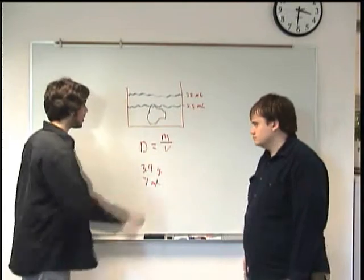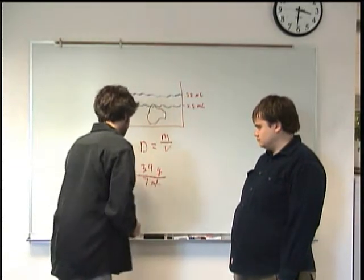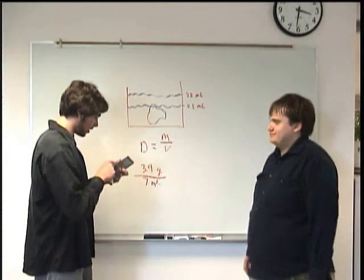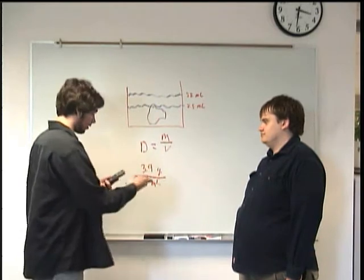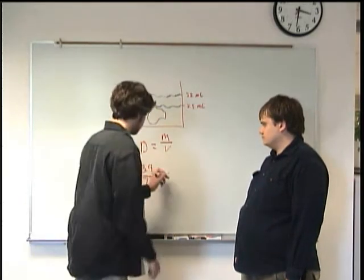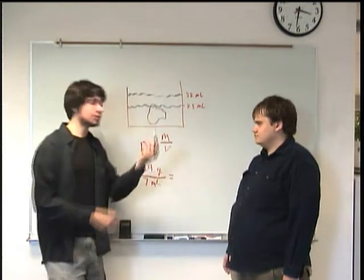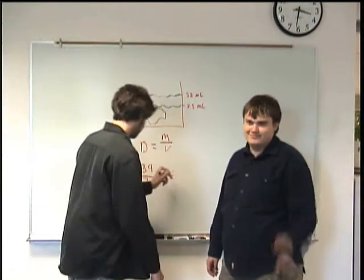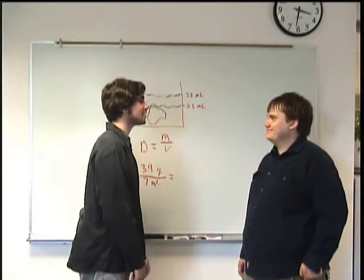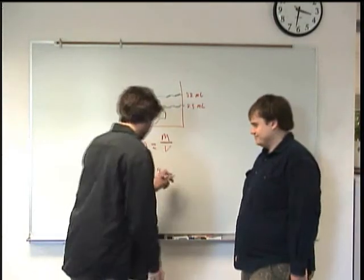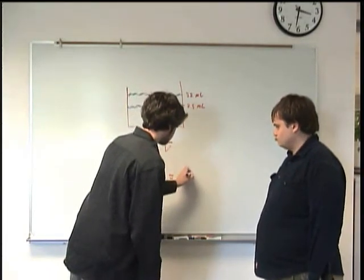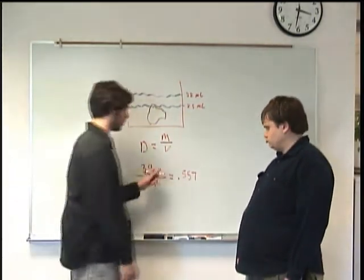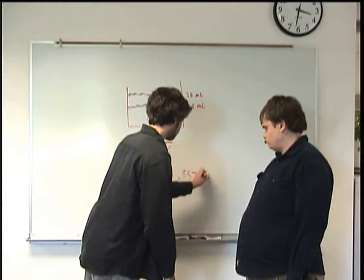Now let's calculate density — it's mass over volume. So, 3.9 grams divided by 7 milliliters. 3.9 divided by 7 equals 0.557. So we're going to have 0.557, and remember we still have those grams and milliliters units, so we say grams per milliliter.